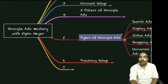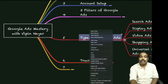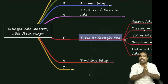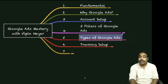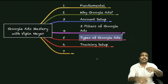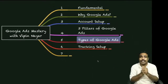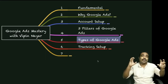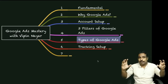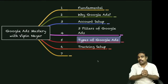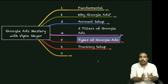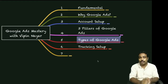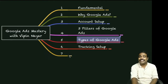Next is Tracking Setup, where we'll cover how to set up tracking. There are two major tracking setups: one is conversion tracking and the other is remarketing tracking. We'll go through how to do both of these in this section.